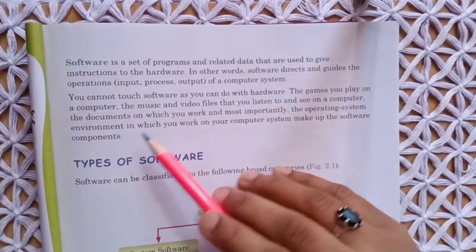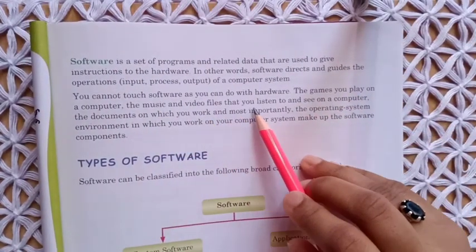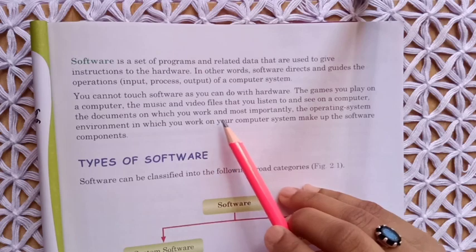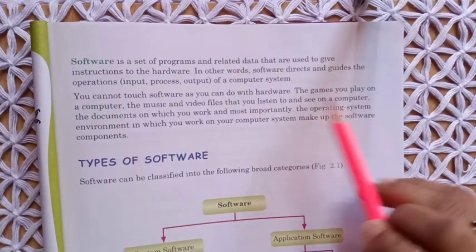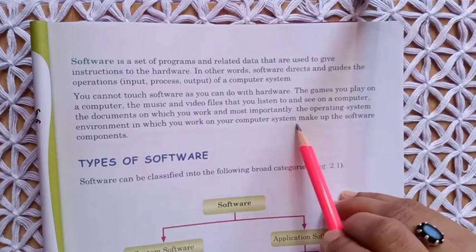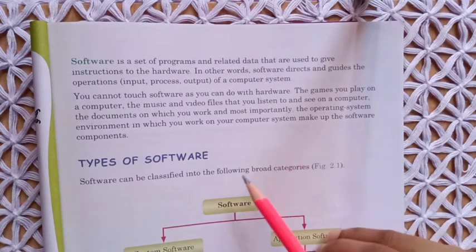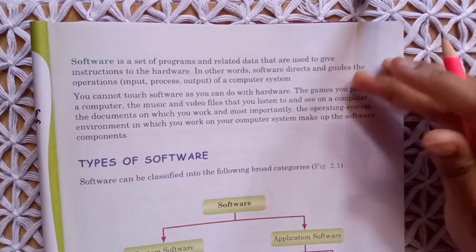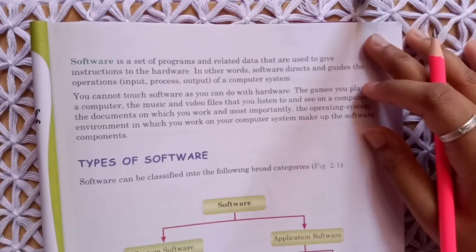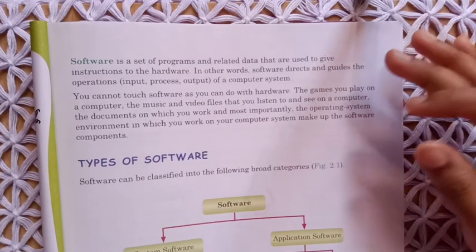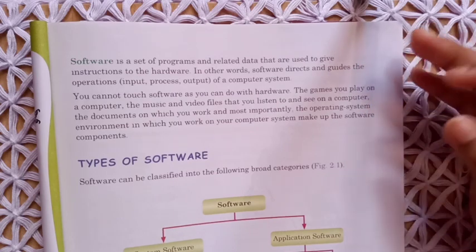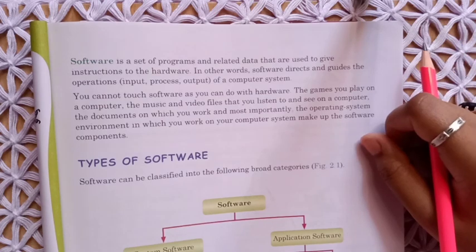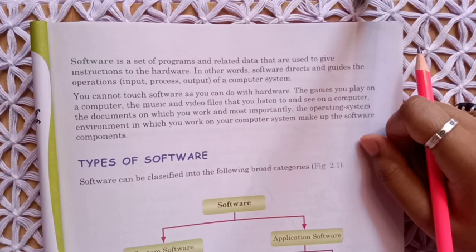The games you play on a computer, the music and video files that you listen to and see, the documents on which you work, and most importantly the operating system environment in which you work — all make up the software components. For example, if you are playing a song, can you touch that file? Can you touch the picture a monitor is displaying? No, we cannot touch any software inside a computer.